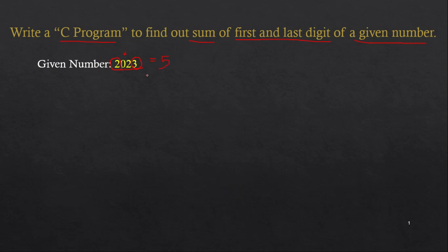For any number, if you want to find out the last digit, we can use this logic. Take the number 2023 and find the remainder after dividing it by 10. The remainder of 2023 divided by 10 is 3, so that will be called the last digit.